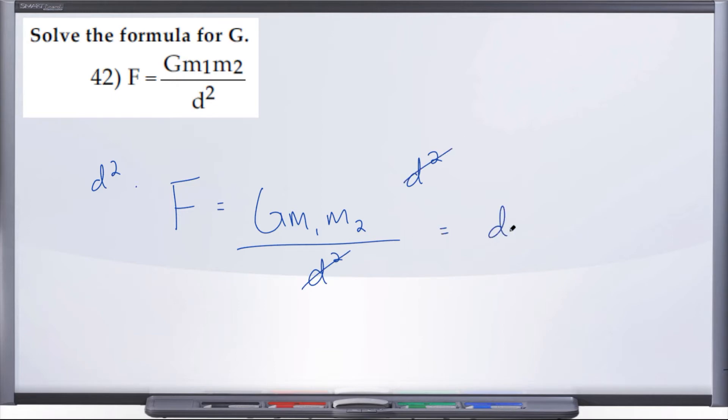And now we're left with d squared times F equals G times m sub 1, m sub 2. And if we want G all by itself, we'll divide by m sub 1, m sub 2 on both sides.